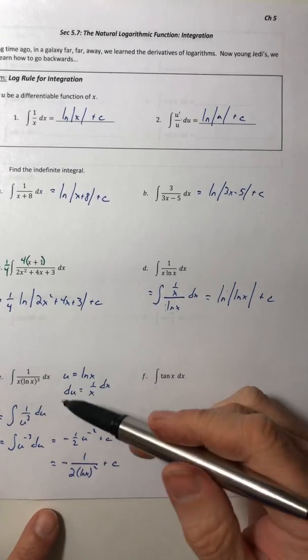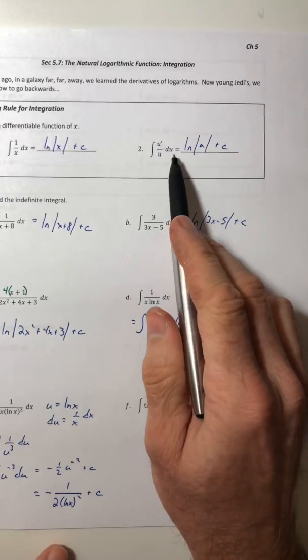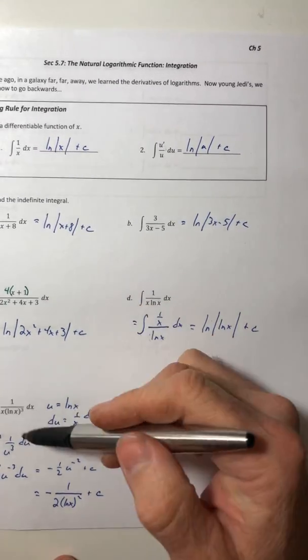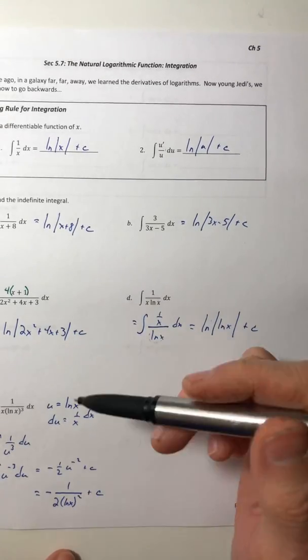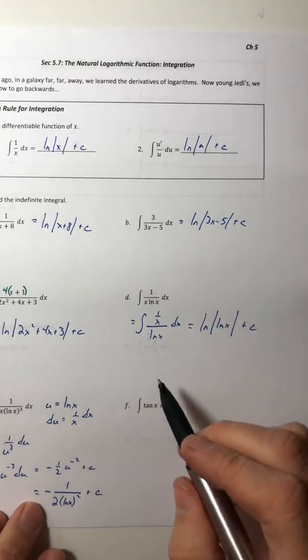So some of these will involve a u substitution, because it's not fitting the u prime over u. So they're not all going to come out just like these. Again, you got to know when to use these rules and when not to.